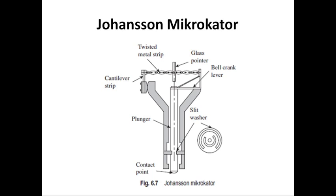The two halves of the thin metal strip which carries the light pointer are twisted in opposite directions. Therefore, any pull on the strip will cause the pointer to rotate. While one end of the strip is fixed to an adjustable cantilever link, the other end is attached to a bell crank lever. The other end of the bell crank lever is fixed to a plunger. Any linear motion of the plunger will result in movement of the bell crank lever which exerts either a push or pull force on the metal strip. The glass pointer will rotate either clockwise or anti-clockwise depending on the direction of the plunger movement. The comparator is designed so that even a minute movement of the plunger will cause a perceptible rotation of the glass pointer. A calibrated scale is employed with a pointer so that any axial movement of the plunger can be recorded conveniently.